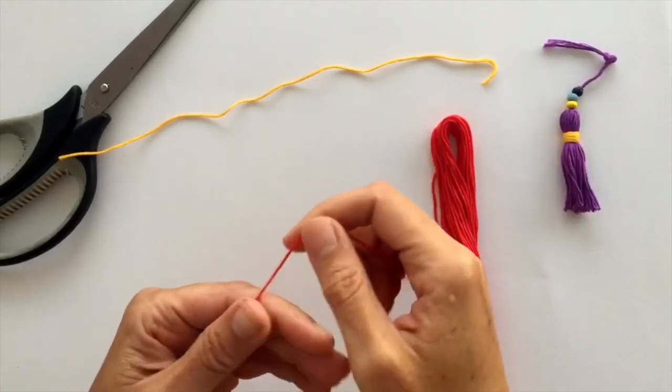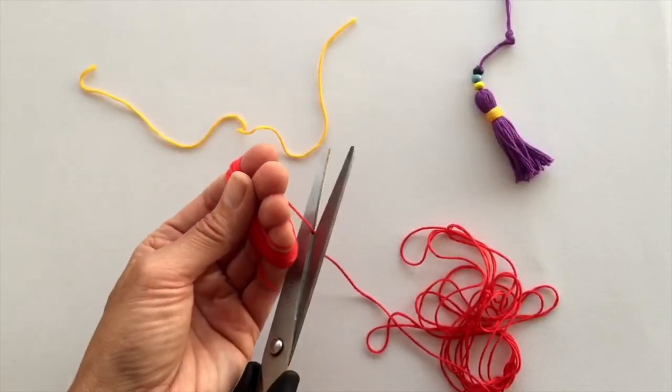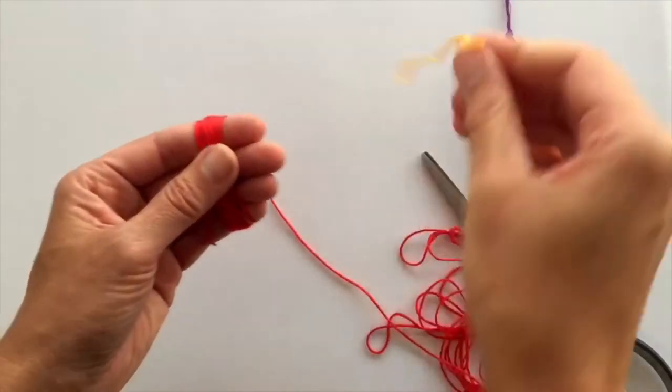We cut with the scissors, and with this thread we're going to pass it under and make a knot at the top center.